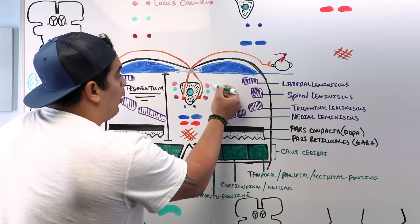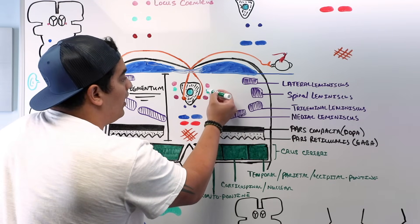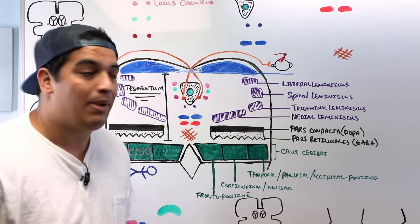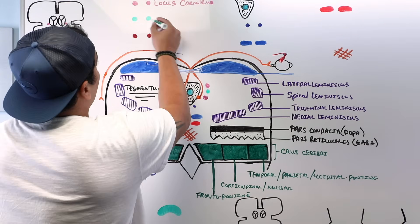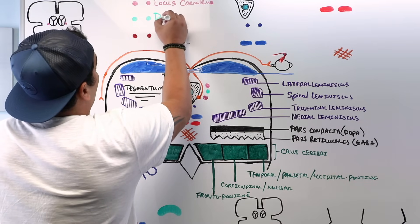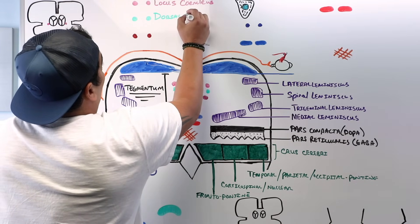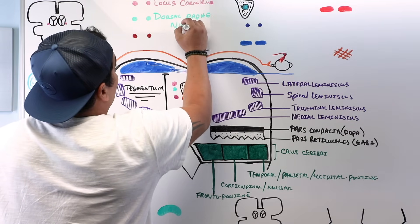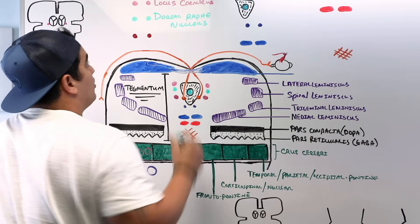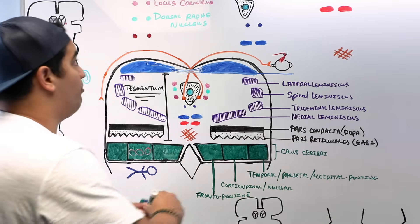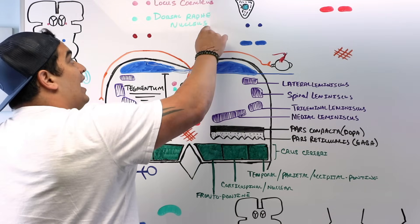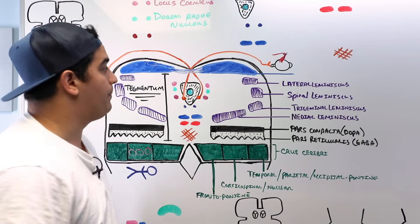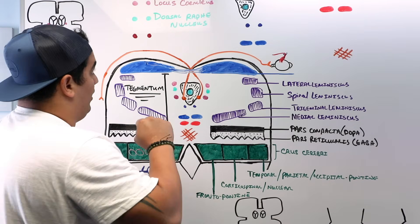A bit more anterior is another group of neurons involved in the descending pain pathway called the dorsal raphe nucleus. Both the locus ceruleus and the dorsal raphe nucleus are involved in the descending pain pathway.